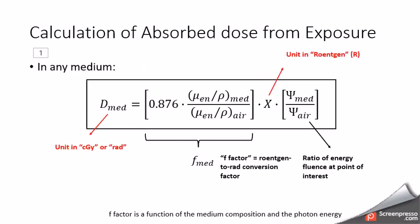And if we were to convert these to medium, it has very similar form. The absorbed dose in the medium, either in the unit of centigrade or in rad, equals to another F factor multiplied by the exposure in Roentgen, multiplied by the ratio of energy fluence at point of interest.